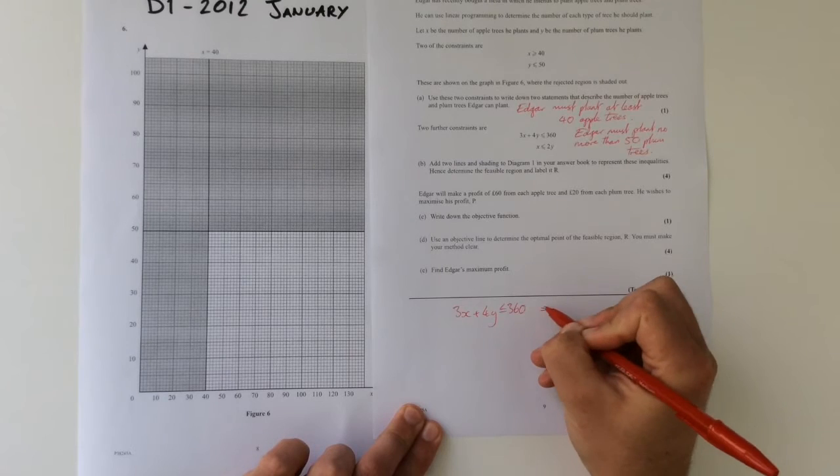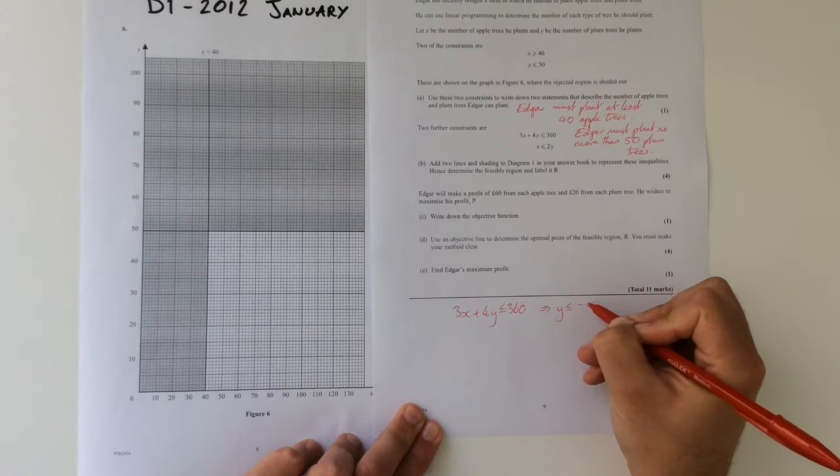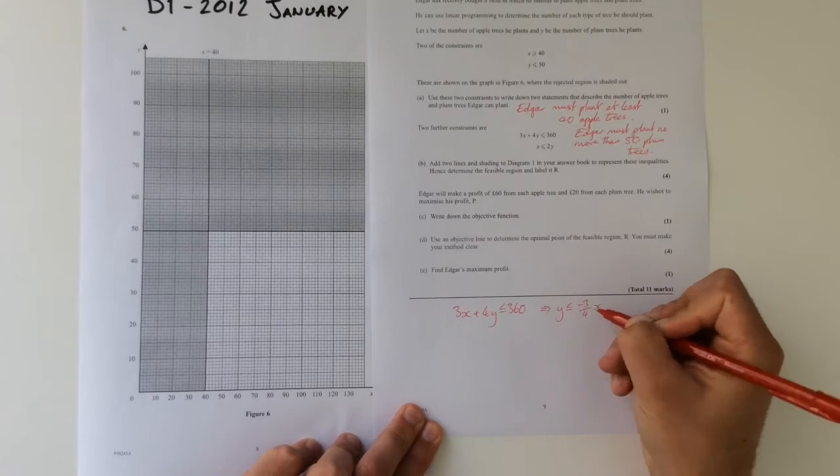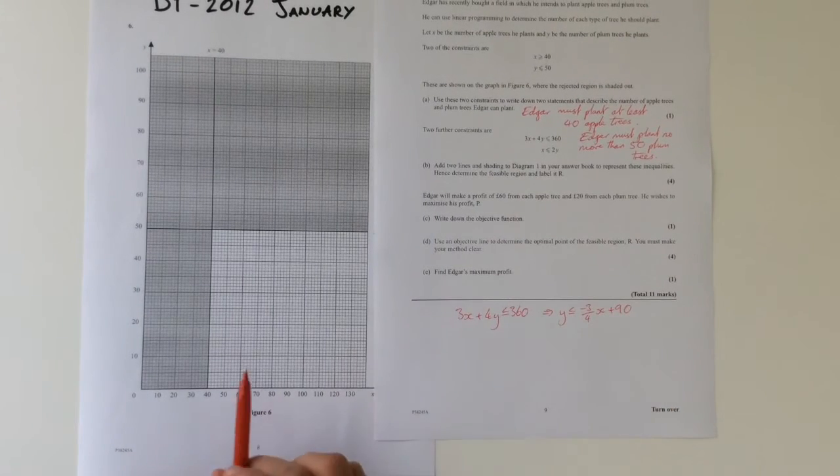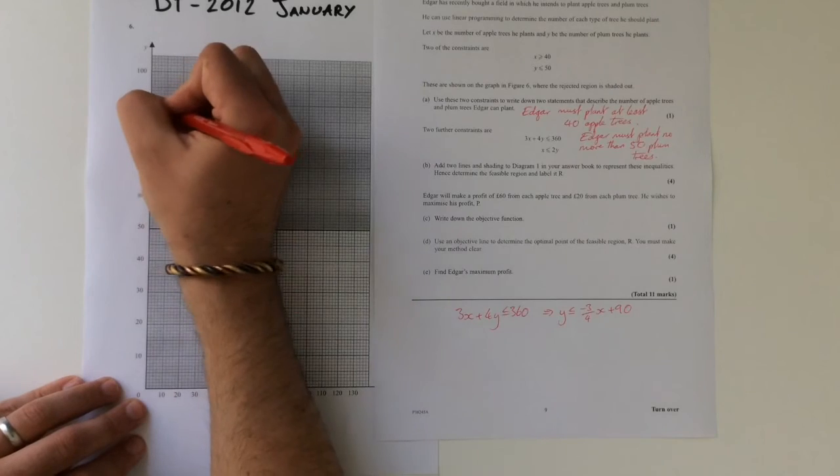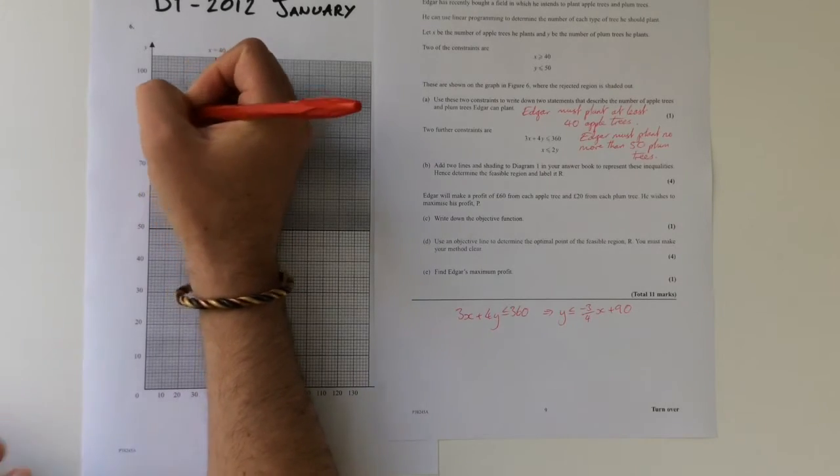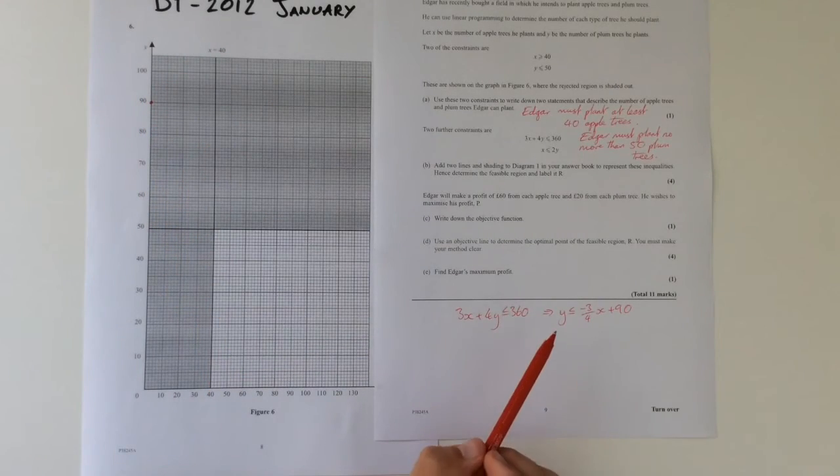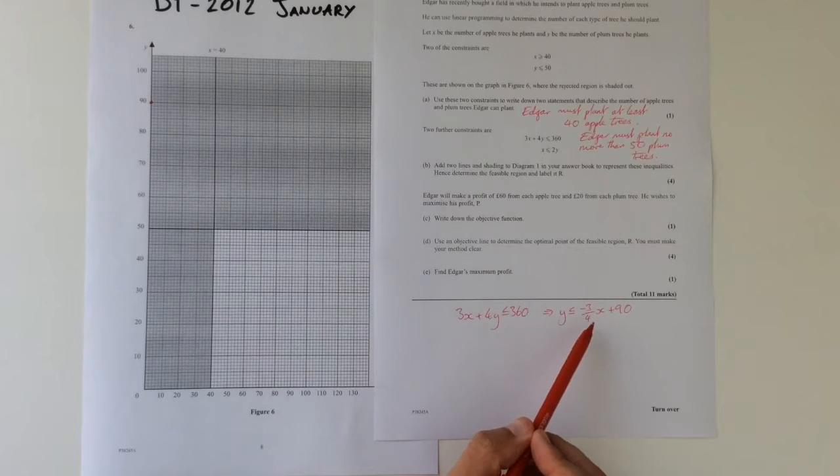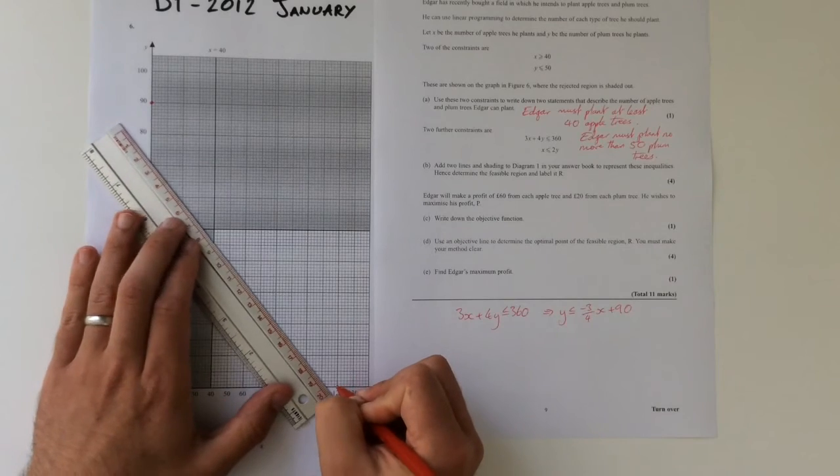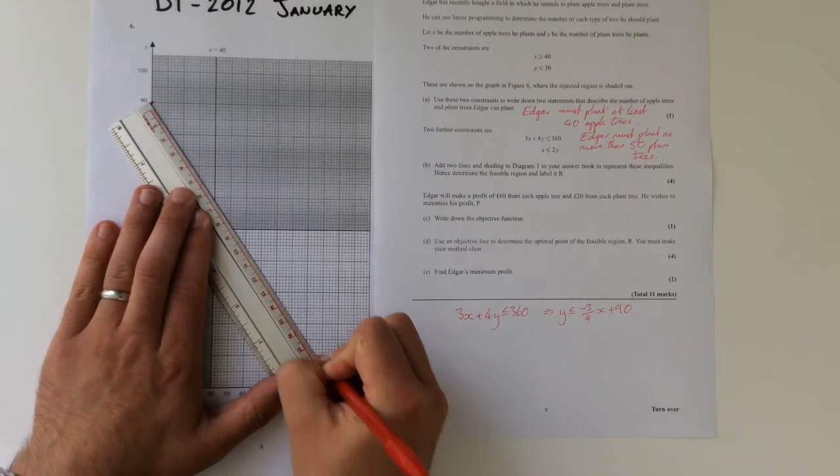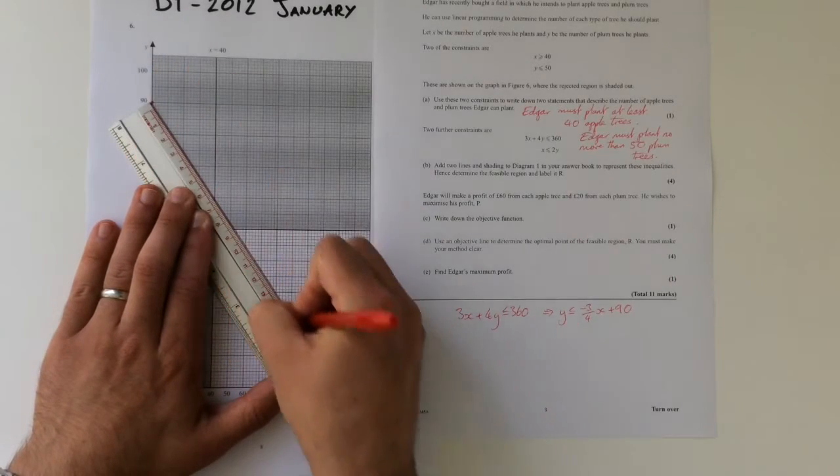I'm going to rearrange that to give me y is less than or equal to minus three-quarters x plus 90. I can then plot that quite nicely and easily on this graph. So, we've got a y-intercept of 90, and if we let our y equal 0, this would give us 120. So that is going to be one of our constraints appearing like that.